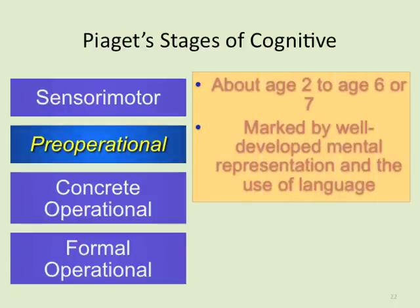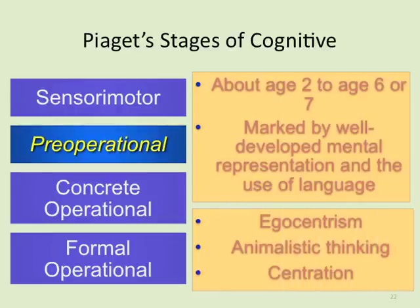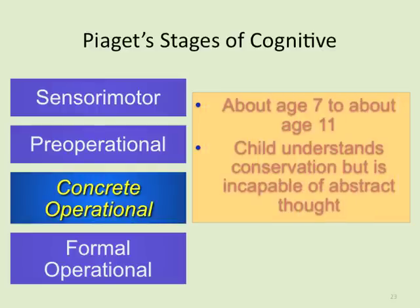The pre-operational stage runs from about age two to six or seven, marked by the development of language use and representation. This is when vocabulary builds at an incredibly fast rate. Egocentrism is a major aspect — it's all about the child. As in the Big Daddy reference: 'I win. Well, what are the rules? I win.' Animalistic thinking — getting what you need right now — and centration are also key features of this stage.